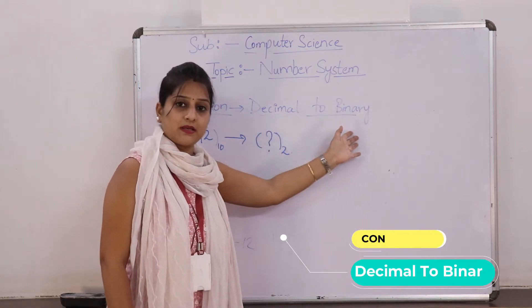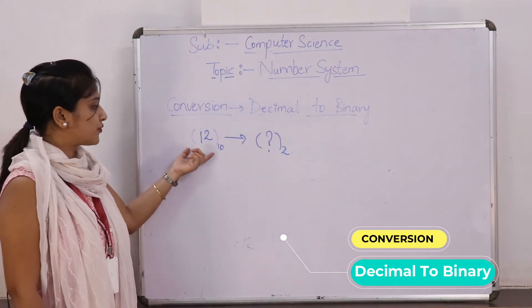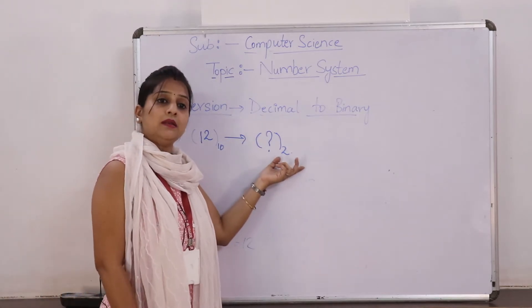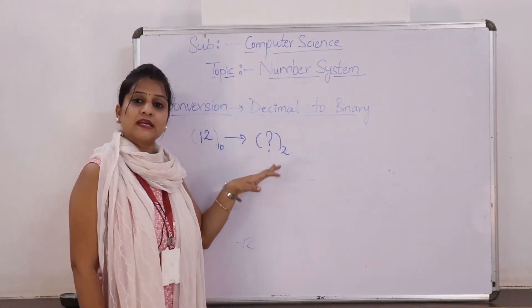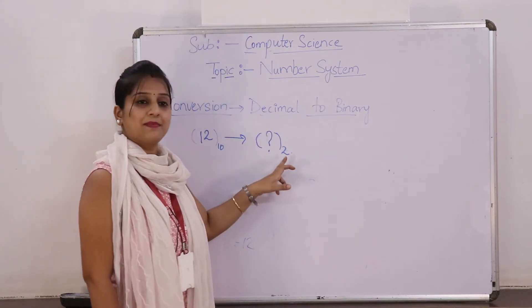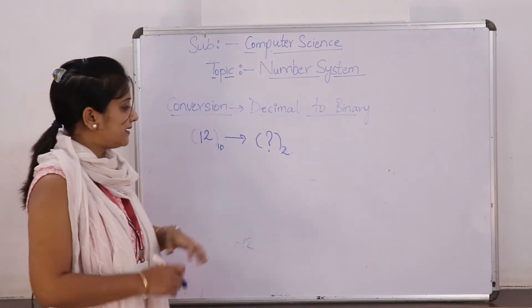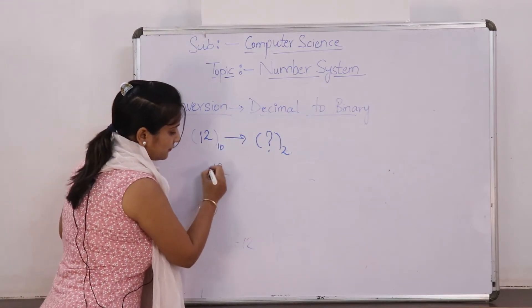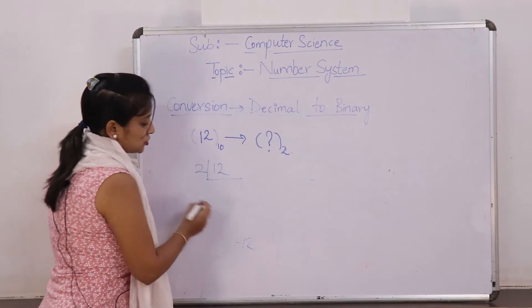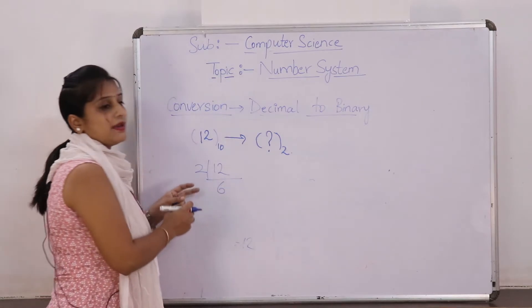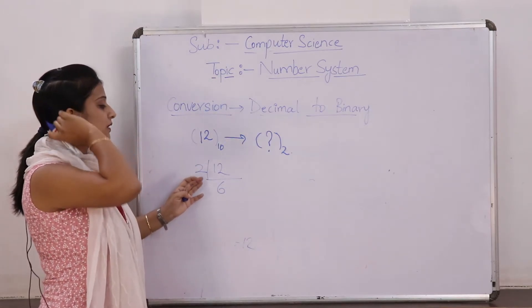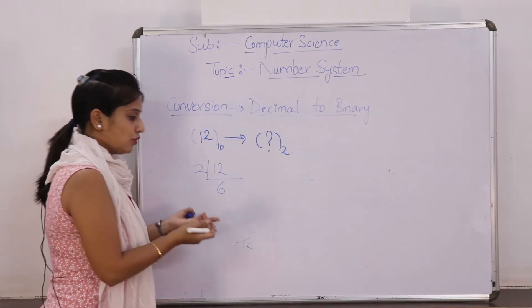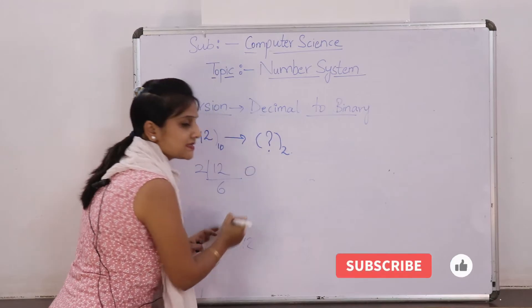Now we will learn about the conversion: decimal to binary. We will convert the decimal number 12 to binary. Since the base of binary is 2, we divide by 2. 12 divided by 2 is 6, remainder 0 — so we put 0. Again divide 6 by 2: 2 threes are 6, remainder 0 — so we put 0.